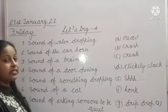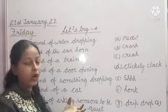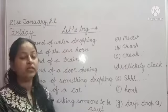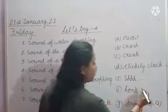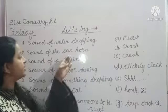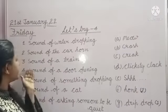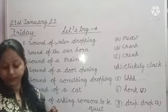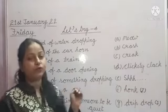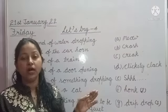The second is 'sound of the car horn.' The sound of the car horn is called 'honk,' so we will write the second here and match it with 'honk.' The next is 'sound of a train' — I have told you about the sound 'toot toot.' That is toot toot.